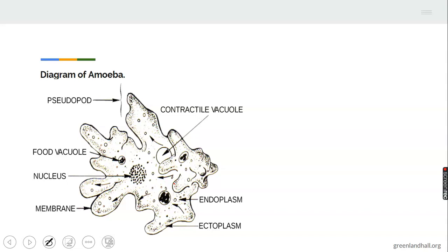Amoeba is shapeless. It has no definite shape. We can see the diagram, the outer part called the membrane, the nucleus that is the center of the life, the food vacuole where food is stored, the contractile vacuole that assists in excretion and osmoregulation, the ectoplasm and the cytoplasm. You have to learn how to draw and label this diagram very well.